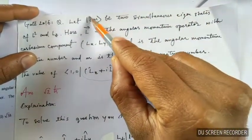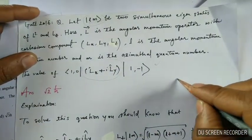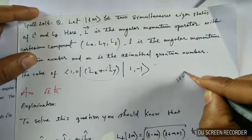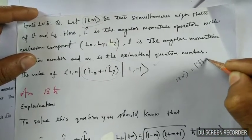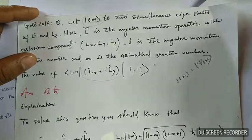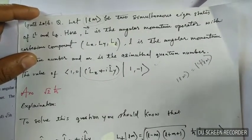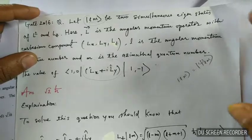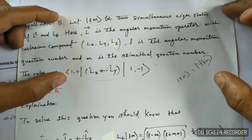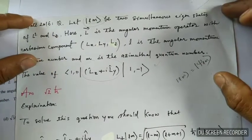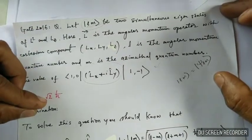The state is written in the form of ket notation |lm⟩, which can also be written in another form. Don't worry about it — let's see how we will solve this question. You can pause the video and read the question carefully. The answer to this question is √2 times h₀.